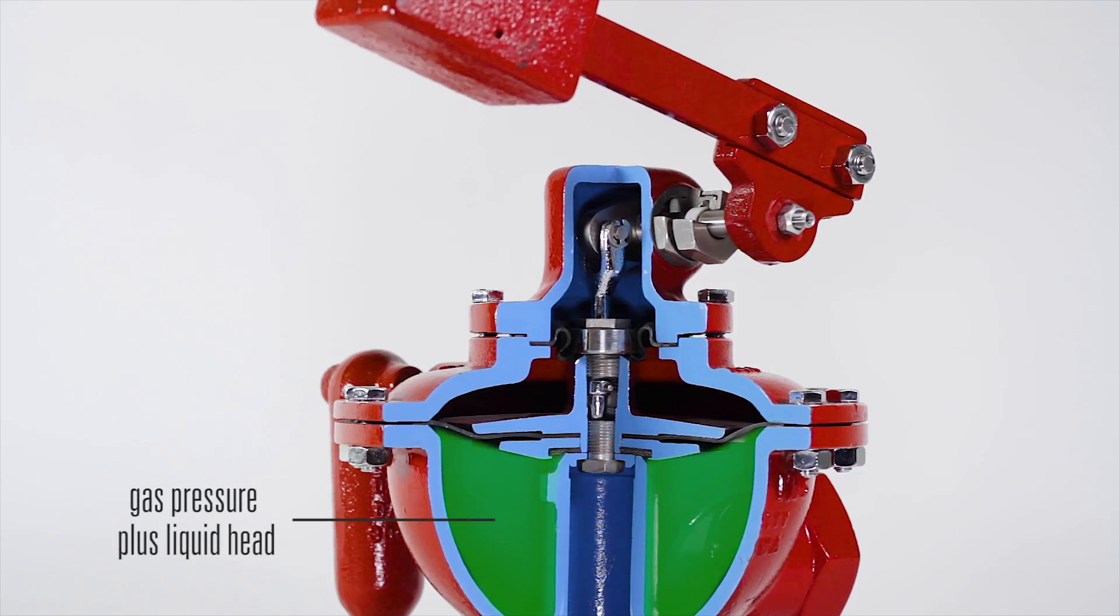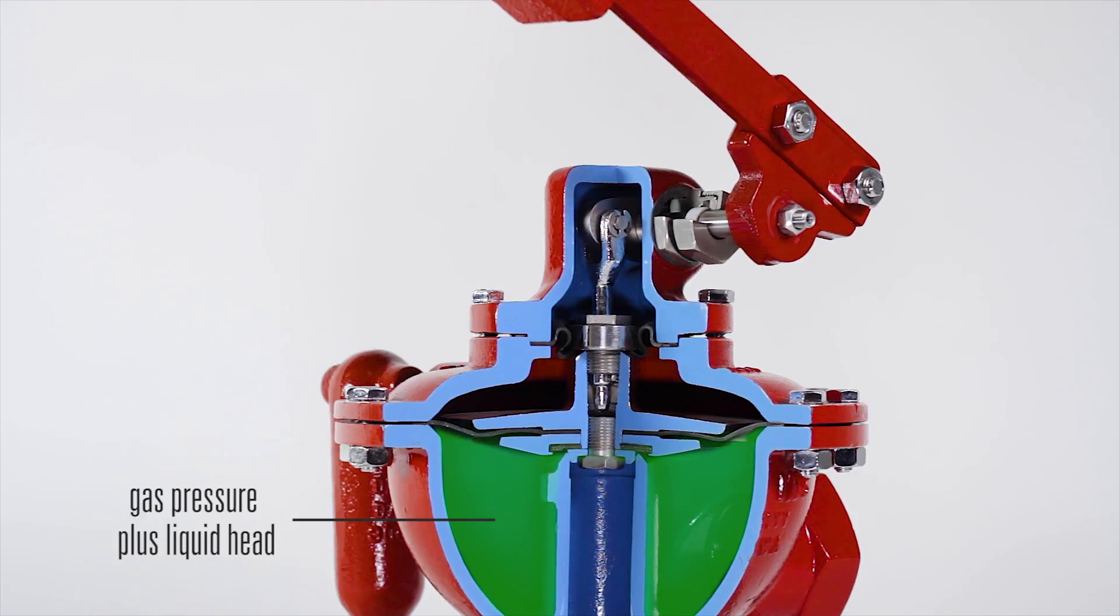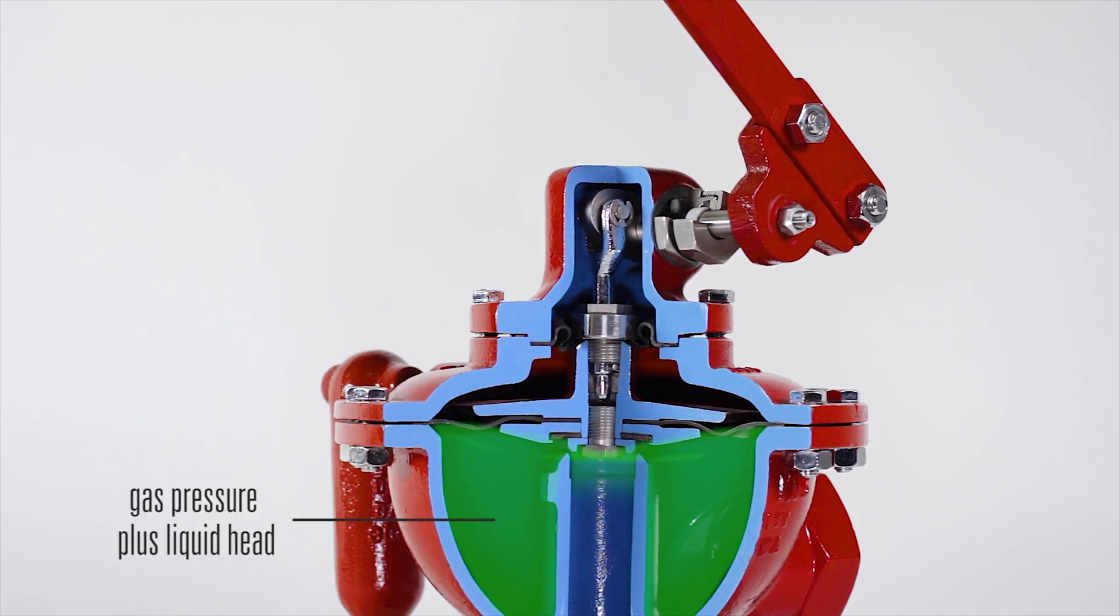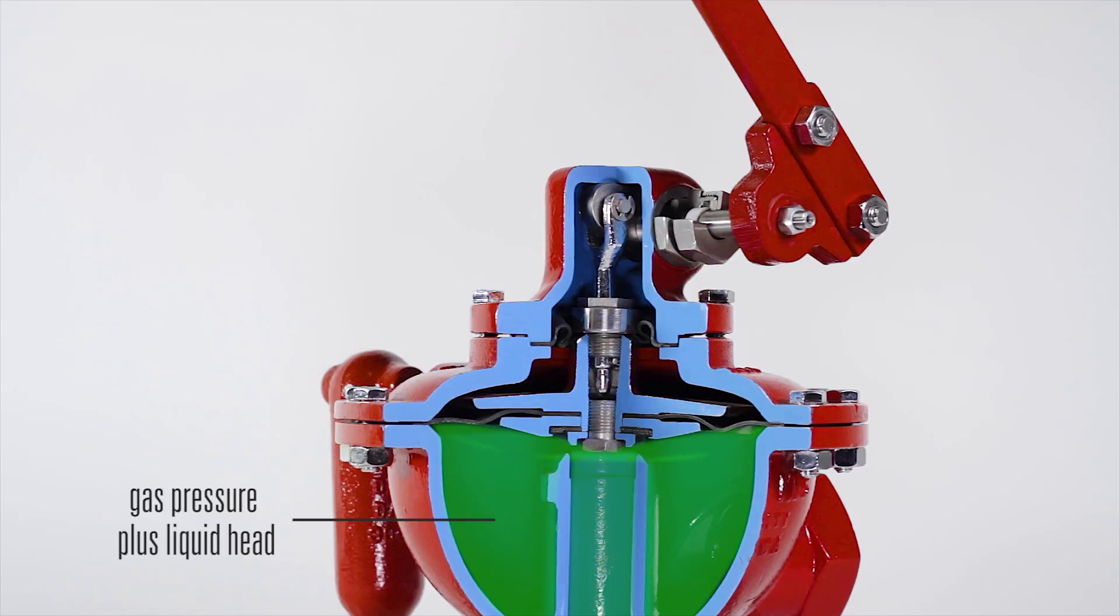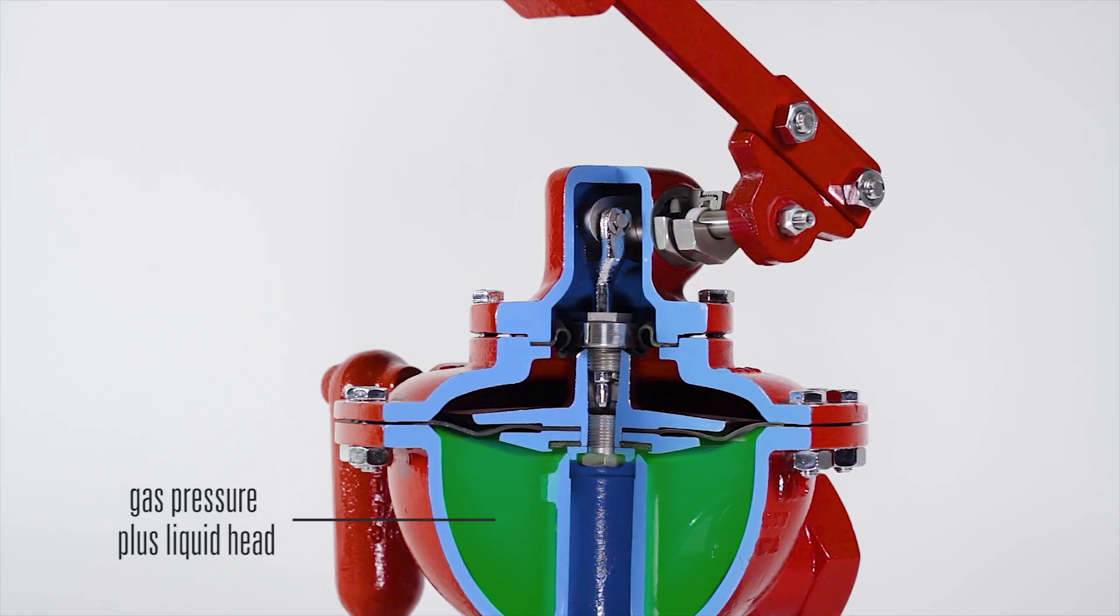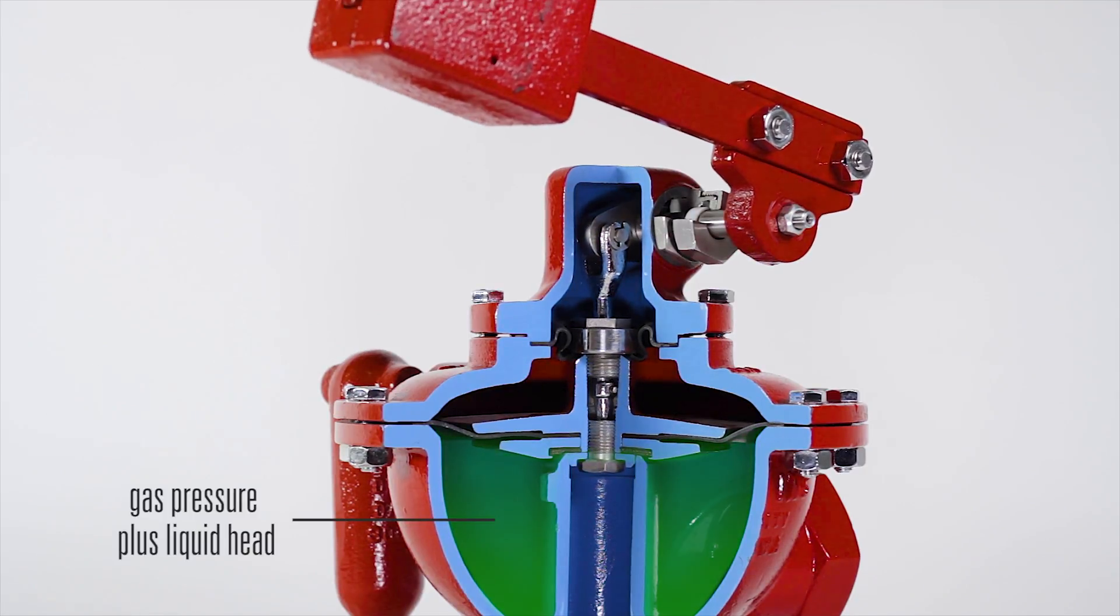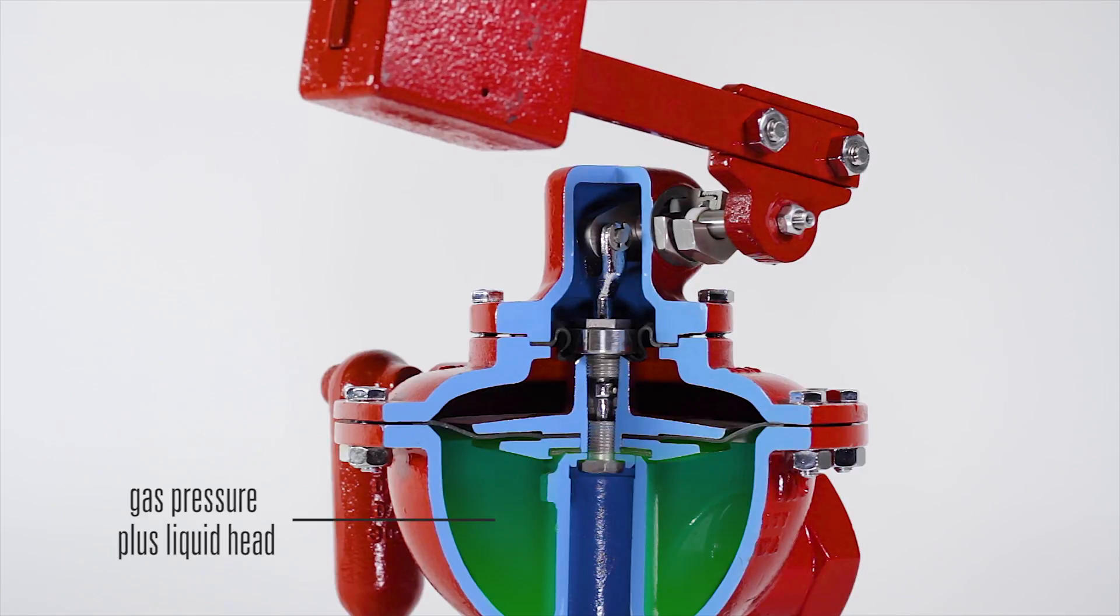When the liquid rises above the set level, it overcomes the force of the weight and lifts the diaphragm assembly against the weight load to open the valve. As liquid is discharged to lower the level, the weight closes the valve.